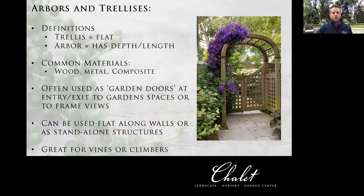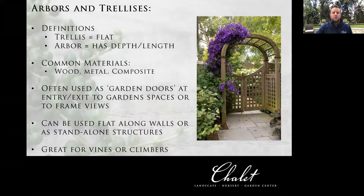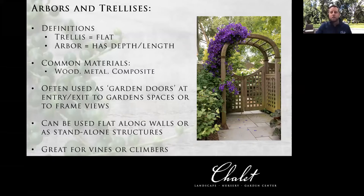Some of the same common materials: wood, metal, and composite. The one on the right in particular is made out of wood with a nice little gate and a very decorative, cottagey feel, especially with the climbing vine on top. This is a good example of using an arbor as a quote-unquote garden door — a great way to create a subliminal feeling of entering or leaving a space, and also to frame views. If you're standing in front of this particular gate and there's a focal point plant or specimen beyond it, that arbor is really going to help frame that view and draw your attention to it.